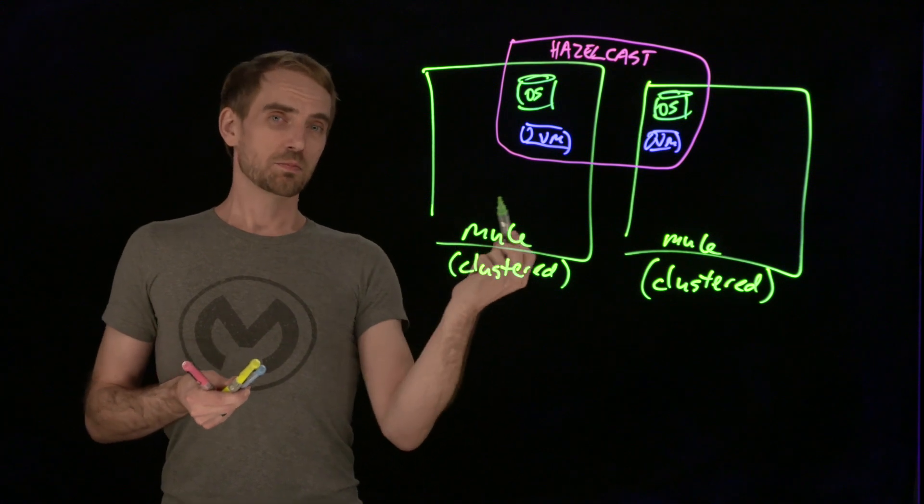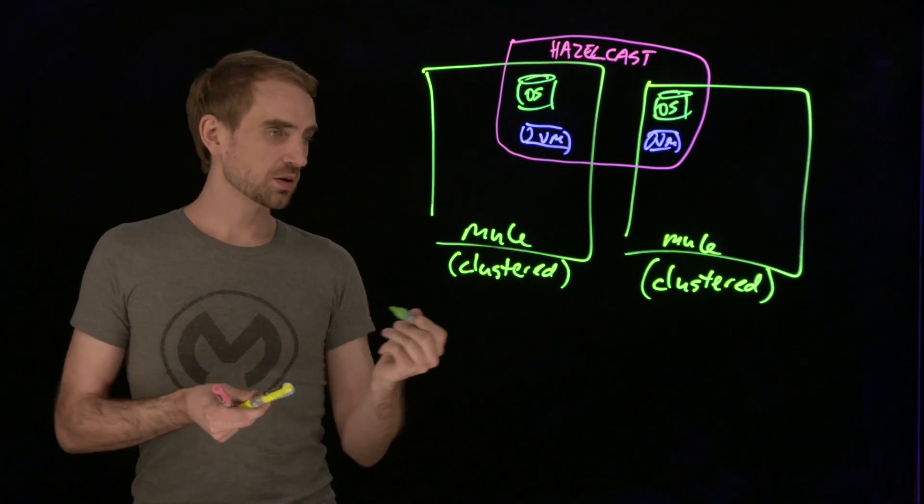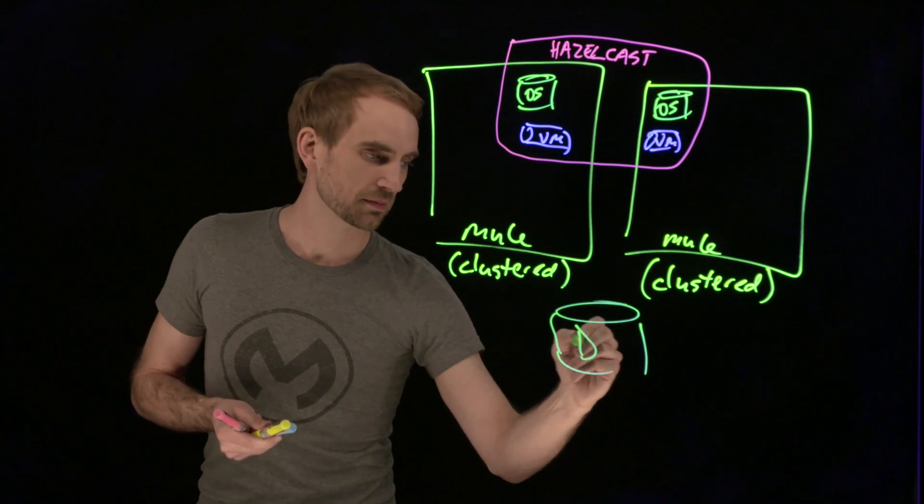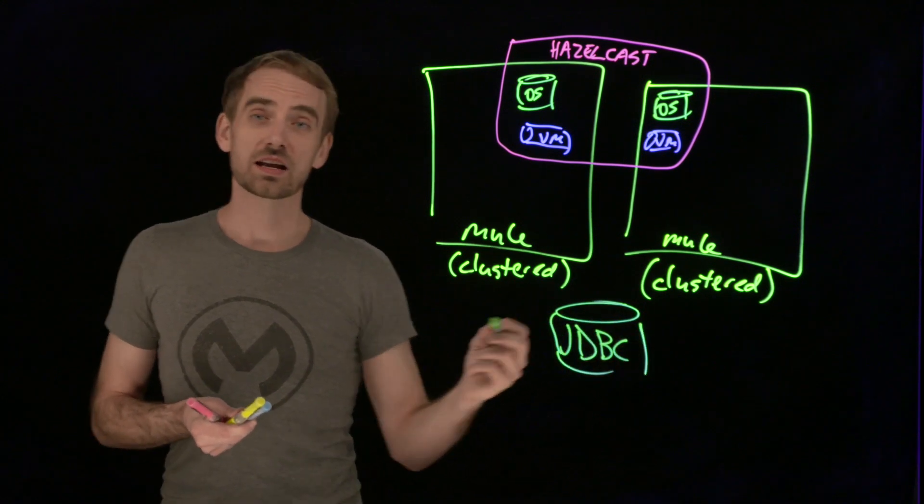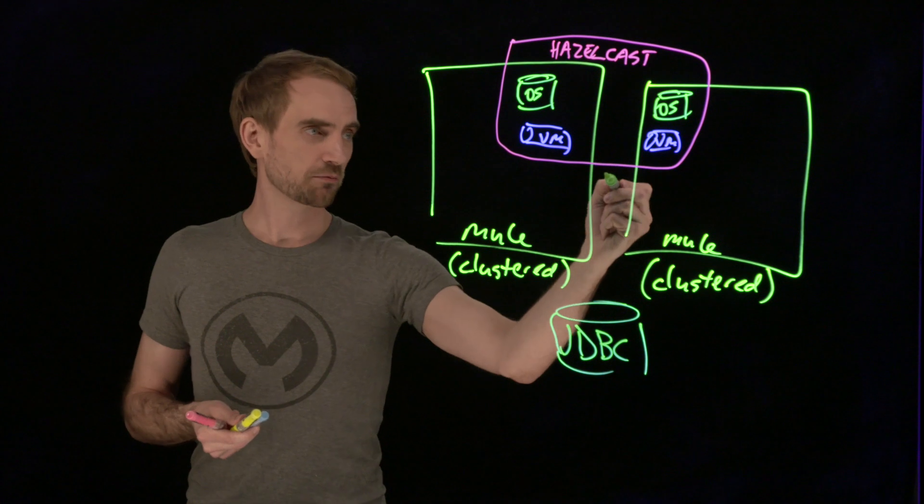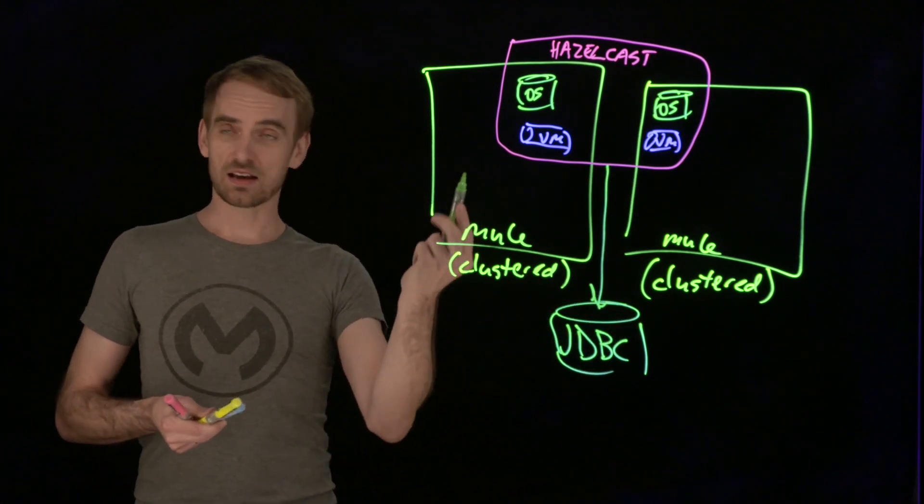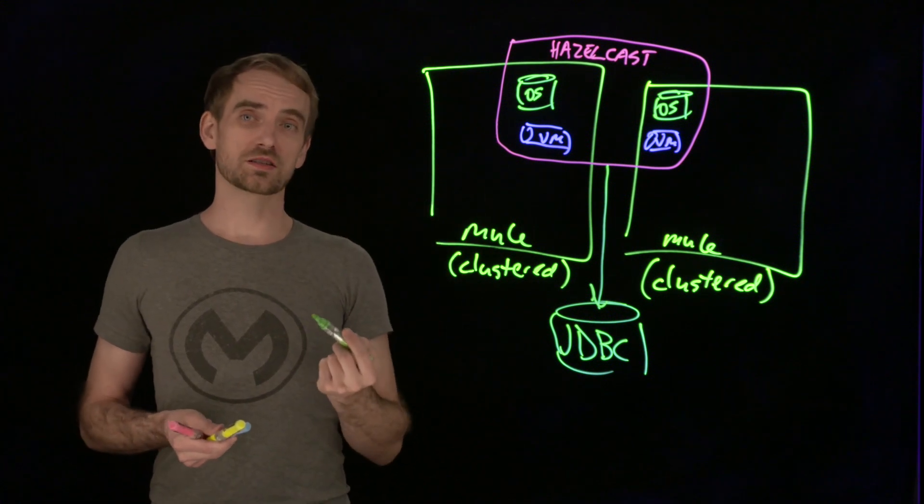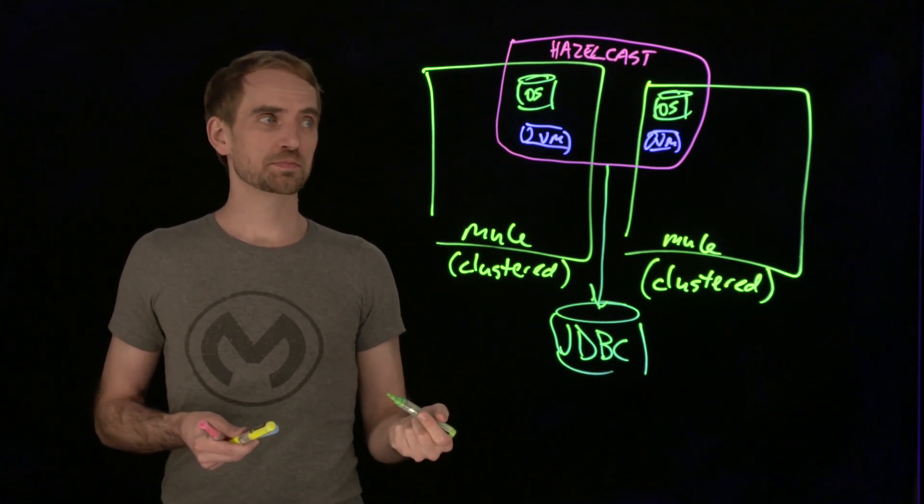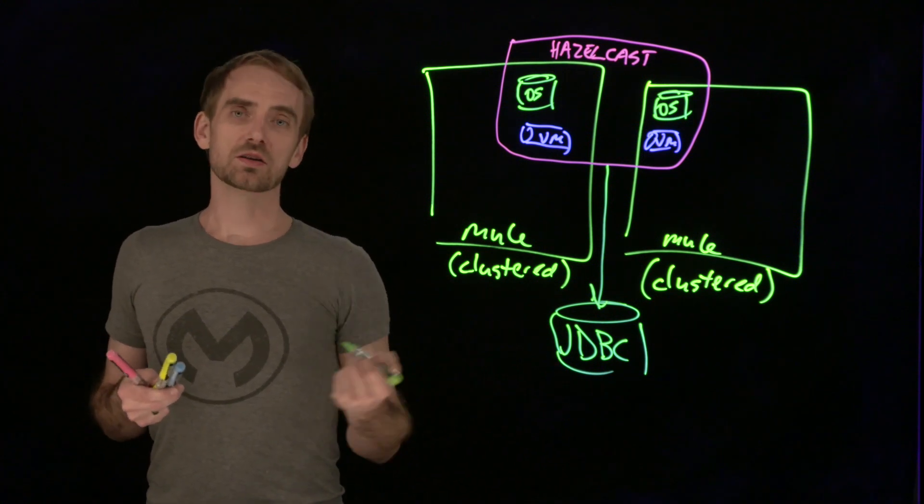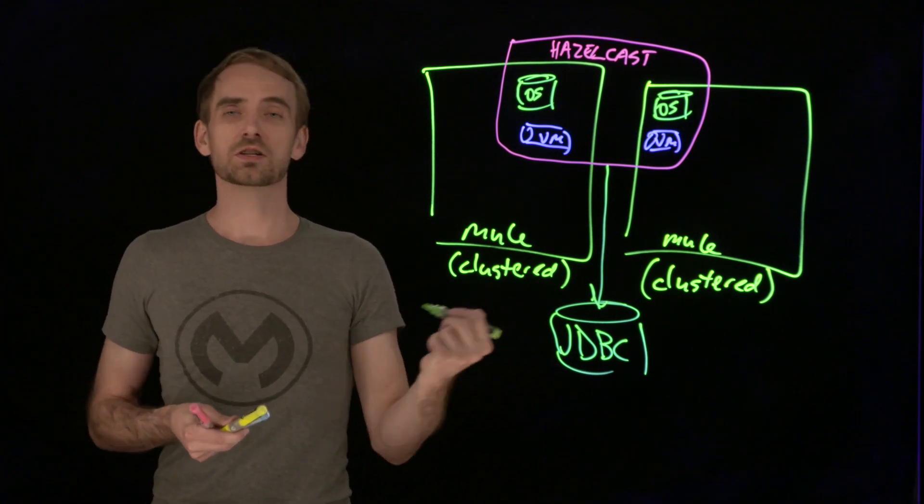Hazelcast can be backed with a database, so if you want to keep the state, you can hook it up using JDBC. This is a Java platform, and you can put in some configuration to use a database to back the stuff that otherwise would have been lost if you shut down all the nodes. You can have it survive full server outage, but you need to back it with a database using additional configuration.